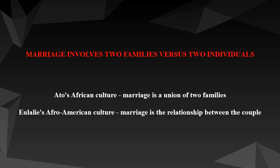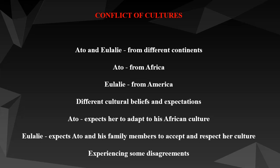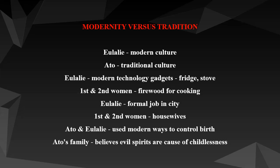The next theme is conflict of cultures. Eulalie and Ato are from different continents — Eulalie is from America and Ato is from Ghana, Africa. The two have different cultural beliefs and expectations. While Ato expects her to adapt to his culture when they arrive in Ghana, this does not happen, as she also expects Ato and his family members to accept and respect her culture. Some of the disagreements they experience revolve around controlling birth, whether a woman's choice of smoking and drinking is acceptable, and the total involvement and participation in extended family affairs of a couple.